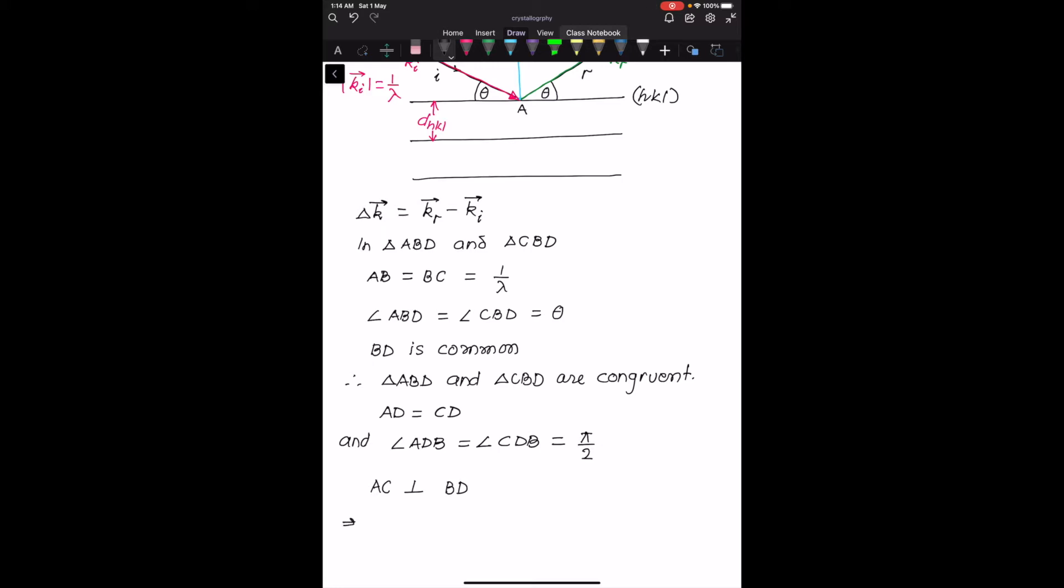But AC is my delta K vector, and BD is parallel to the HKL plane. So delta K is perpendicular to the HKL plane. We get one interesting property.